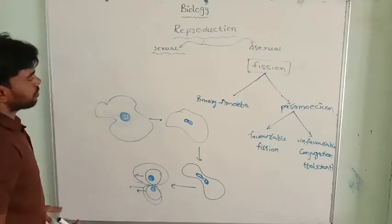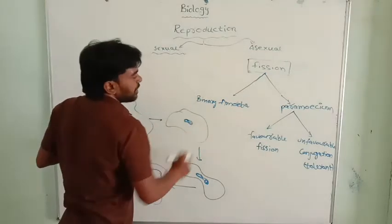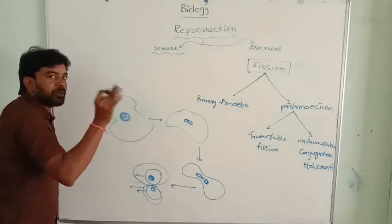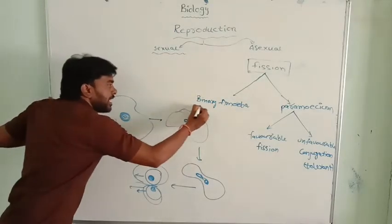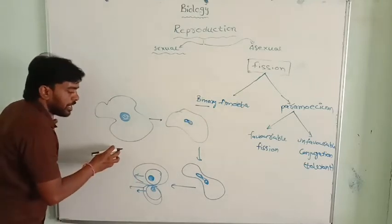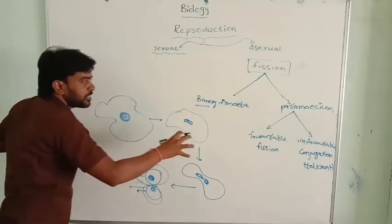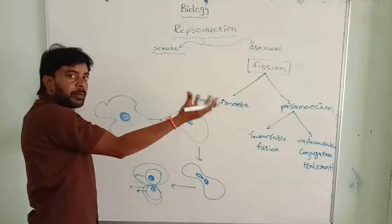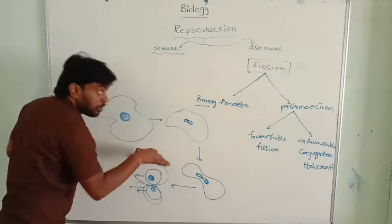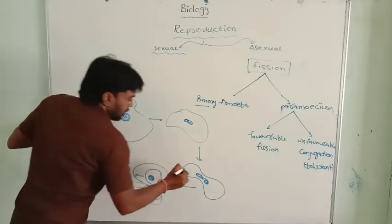This is the nucleus, and here the nucleus is separated. And thus the permeable membrane also separated. Then these two are individuals that can survive. This is binary fission. Binary means two.